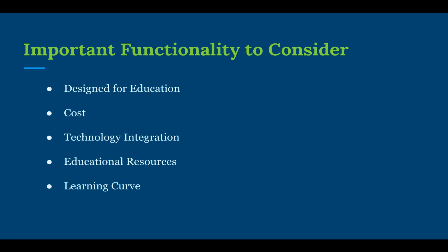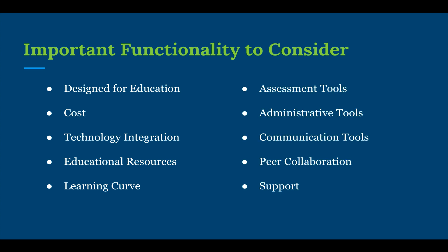When we evaluate these two learning management systems, there are ten important functionalities that we are going to consider: whether they were designed for education or for business purposes, the cost of the systems, their technology integration, the educational resources provided within the system, the learning curve to understanding how to operate both systems, the assessment tools they provide, administrative tools such as taking attendance and doing grades, communication tools with students, parents, and other stakeholders, peer collaboration between teachers, and support provided when there are issues with the programs.